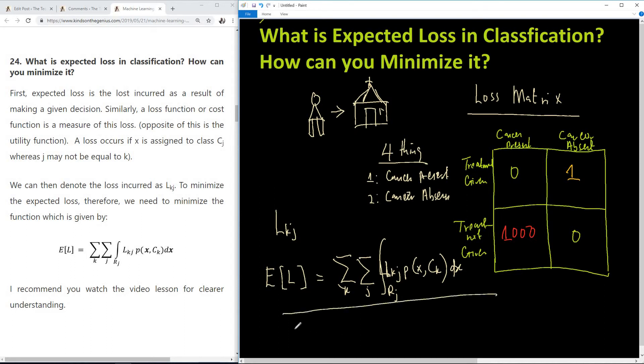So this is the expected loss function and explanation. Always remember the utility matrix. If you're unable to remember this function, then remember the utility matrix and use it to explain expected loss.